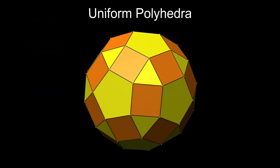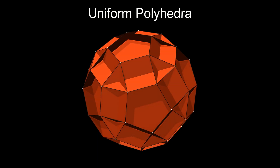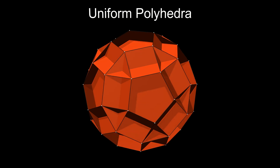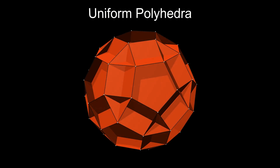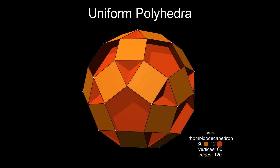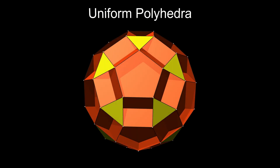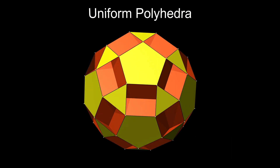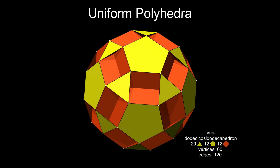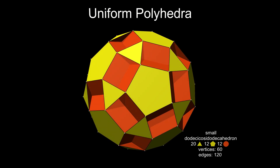And finally, the rhombicosidodecahedron can be faceted with decagons, this time not passing through the exact centre. Adding back the original squares gives the small rhombidodecahedron, or adding back both the triangles and the pentagons produces the small dodecacosidodecahedron.